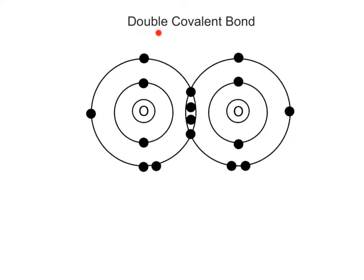A double covalent bond forms when two atoms share two pairs of electrons. An example of a molecule held together by a double covalent bond is oxygen gas, with a molecular formula of O₂. The structural formula for oxygen gas is written with two dashes between the oxygen atoms representing the double covalent bond.